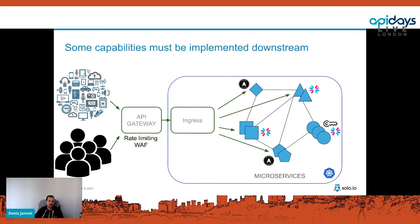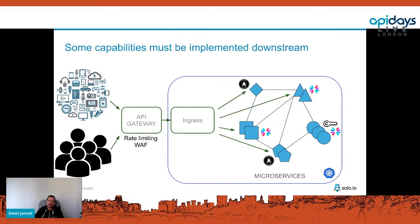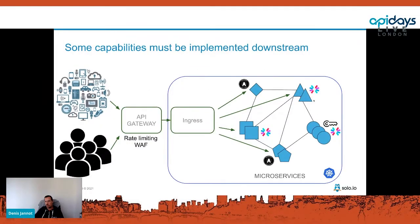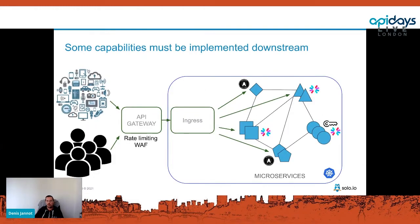This creates several challenges. The first is that everyone reinvents the wheel and implements OIDC or different auth flows in their applications, perhaps using different languages, with always-different implementations — instead of spending time on business logic. The other issue is that the security team has no visibility on what's configured. You want to understand how your APIs are currently secured in order to improve that.